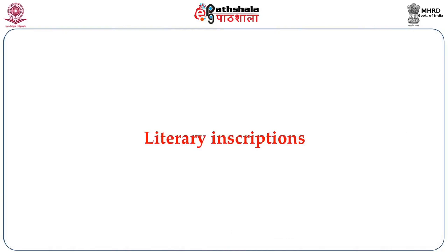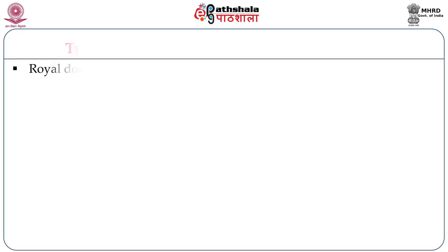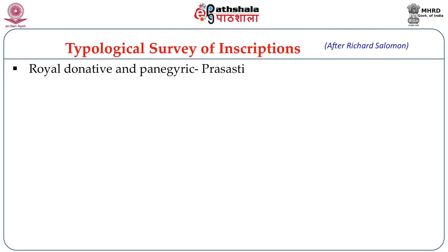In the typological survey of inscriptions, you had seen that Richard Solomon divided the contents of inscriptions found in the Indian subcontinent into 10 different categories. These 10 categories are: Royal, Donative and Panegyric, which includes Ashokan inscriptions and Prashastis.